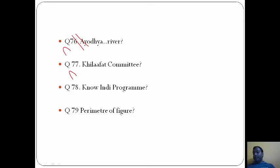Khilafat Committee held at Malabar - answer is C. Know India Programme is a program for diaspora youth to promote awareness among them about different aspects of India - answer here will be C. Question 79: the perimeter of the figure will be 44 centimeter, that is A. This side is 10, this is 12. So 12 plus 10 plus 12 - this becomes 44.